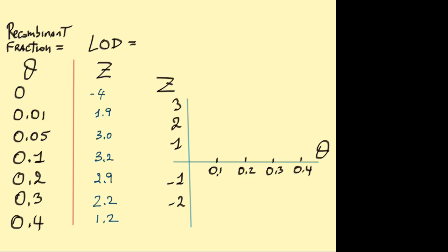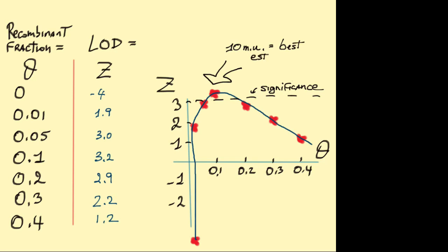Plotting this data, we clearly see that the maximum is at a theta of 0.1, which crosses the significance threshold of 3. So, the best estimate of genetic distance is 10 map units or theta of 0.1.